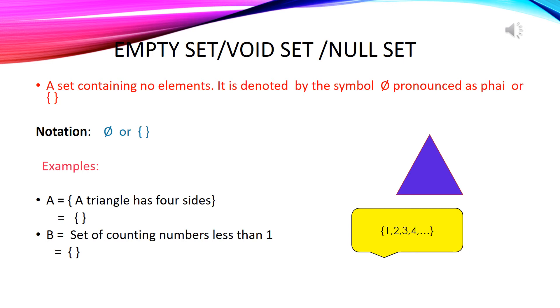In the second example if we have a set of counting numbers less than one then it is empty because counting numbers starts from one, two, three and so on. So here we have no element less than one.